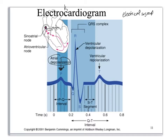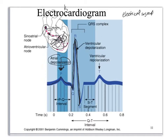The P wave corresponds to atrial depolarization. Then we get to the QRS complex. During this time, the signal was moving through all the ventricles so that they can all depolarize at once — that's a lot more area — so we get this huge signal on the electrocardiogram called the QRS complex. While this is occurring, the atria were repolarizing, but because the QRS complex is so big, it masks the repolarization of the atria.